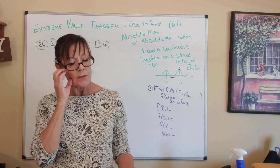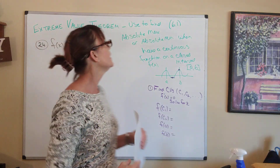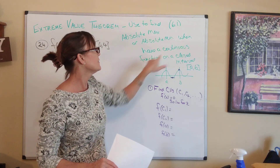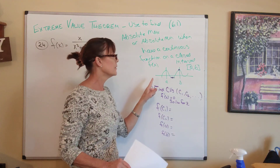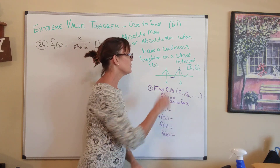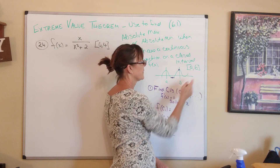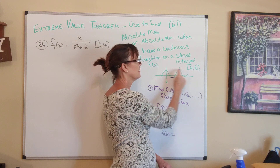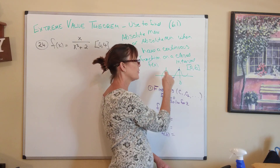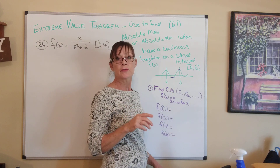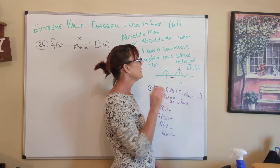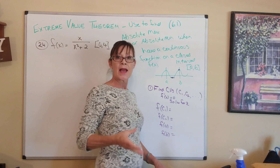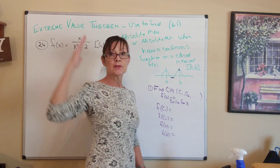This theorem is used when we want to find the absolute highest and the absolute lowest. You can apply it when you have a continuous function on a closed interval. If you have a continuous function closed off between two values, a and b, we are guaranteed that somewhere on this interval — either at an endpoint like a or b, or at a critical value where the first derivative equals zero or is undefined — the maxes and mins will occur. We're guaranteed to have an absolute max and an absolute min.